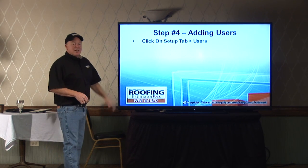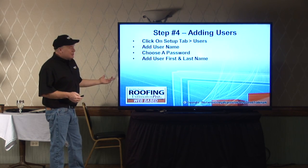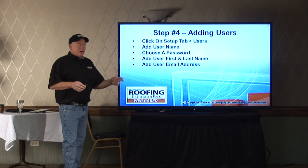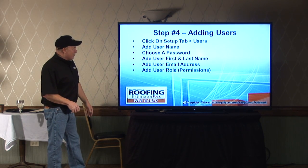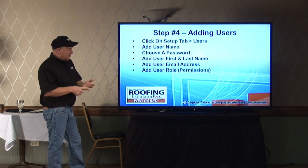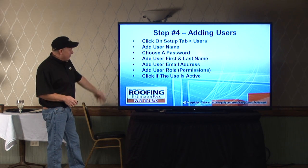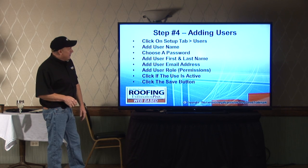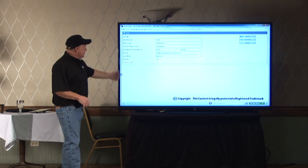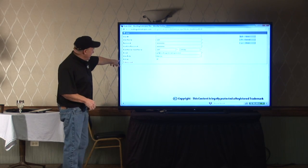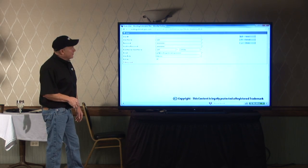Setting up a user is very simple. Go to the setup tab, click on users, add the customer username, enter their password, set up the first and last name, and the user email address — this is important because any estimate a sales person sends will come from that email address and customers will reply to it as well. Add user permission roles: advanced, admin, or basic user. Click the active tab — if a salesperson isn't working for you anymore, just unclick that and they're off the system. Hit the save button and the user is set up. The admin or owner can change these automatically.